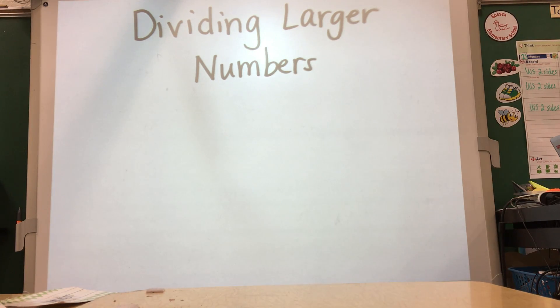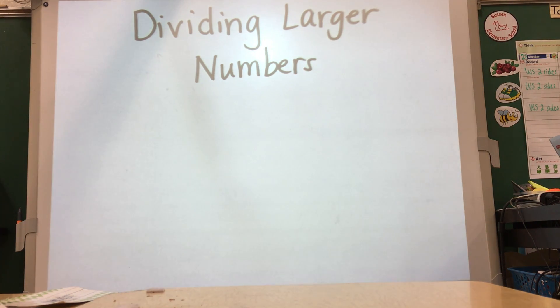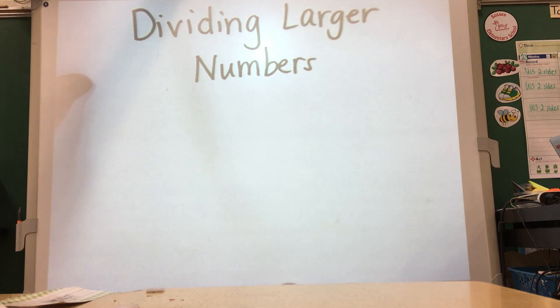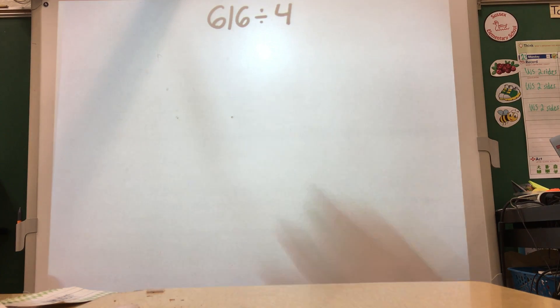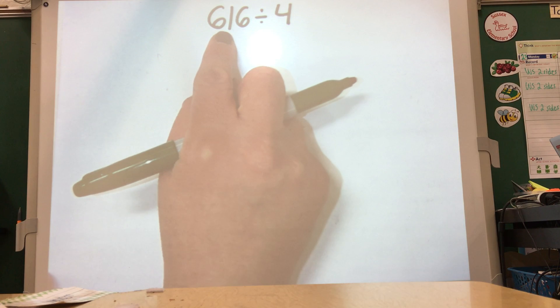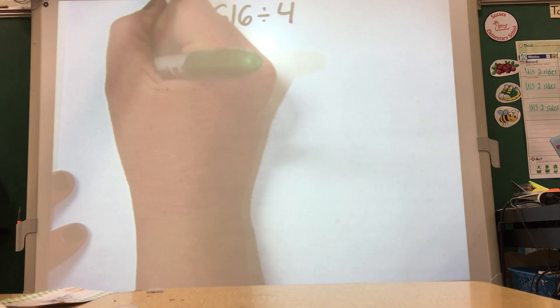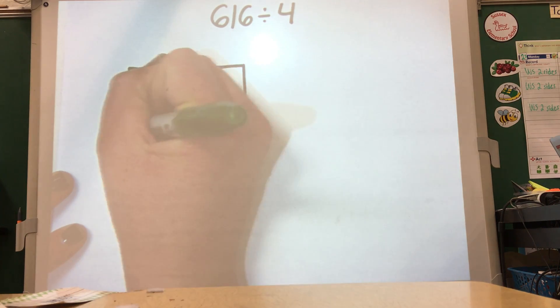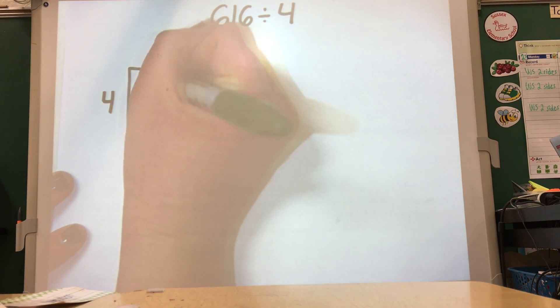Students right now have really been split in my fourth grade classes — half like the area model and half like partial quotients. I'll show them side by side so you can see how they connect. The first problem we're going to solve is a three-digit one: 616 divided by four. Right away, I notice that 616 is greater than 400, so my answer is going to be greater than 100.